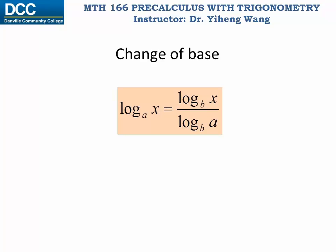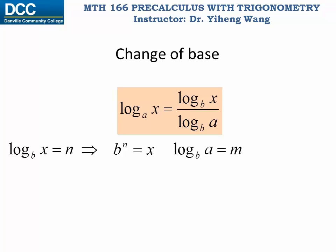If you're wondering why this is true for logarithm, let me show you. Let's say if we use letter n to represent the numerator log base b of x — in other words, log base b of x equals to n. Therefore we can rewrite this logarithmic expression into its equivalent exponential expression: b to the nth power equals to x. Then we use letter m to represent the denominator, therefore log base b of a equals to m. Again we can rewrite this into the exponential expression: b to the mth power equals to a.